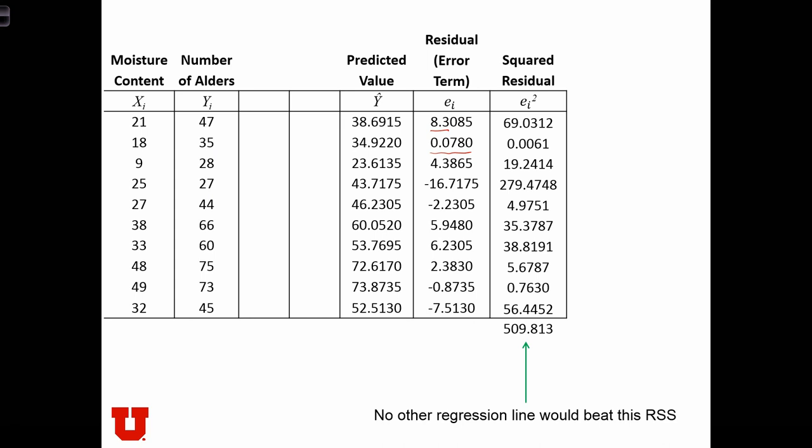We also need to calculate the squared residuals. Because remember, the sum of the squared residuals is a value, a quantity, that we are minimizing when we find our regression line. So to do that, we're just going to be squaring the residual column. So 8.3 squared is 69. 0.078 squared is 0.0061, and so on. We're just squaring these values. And we add them all together and get 509.813.